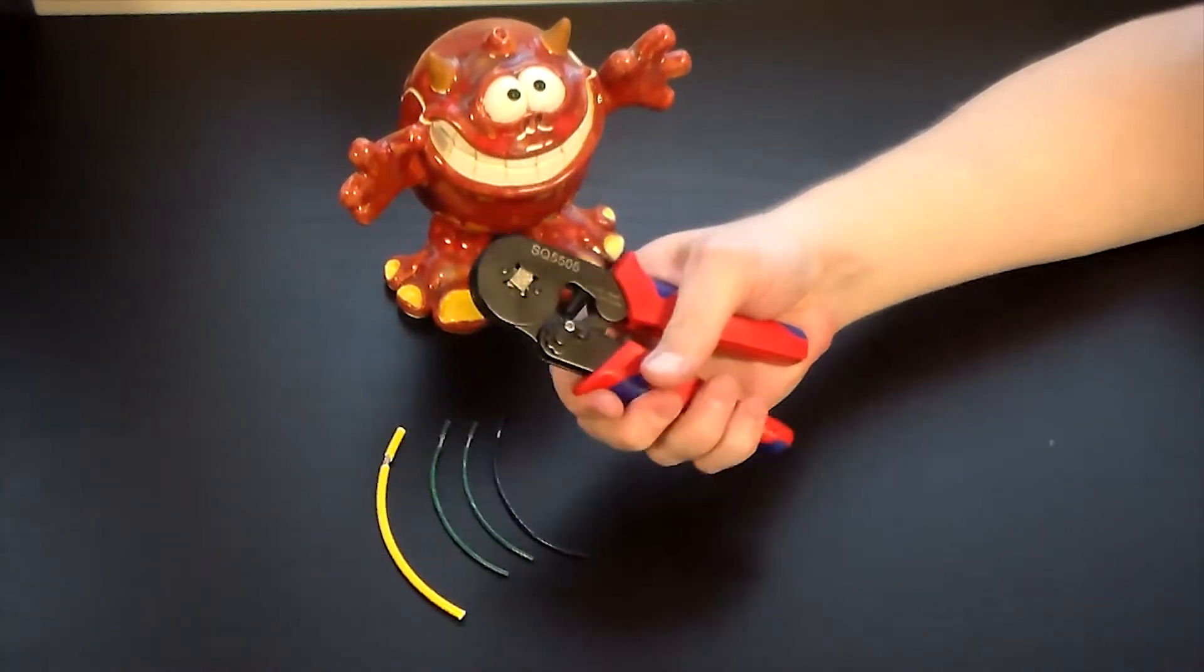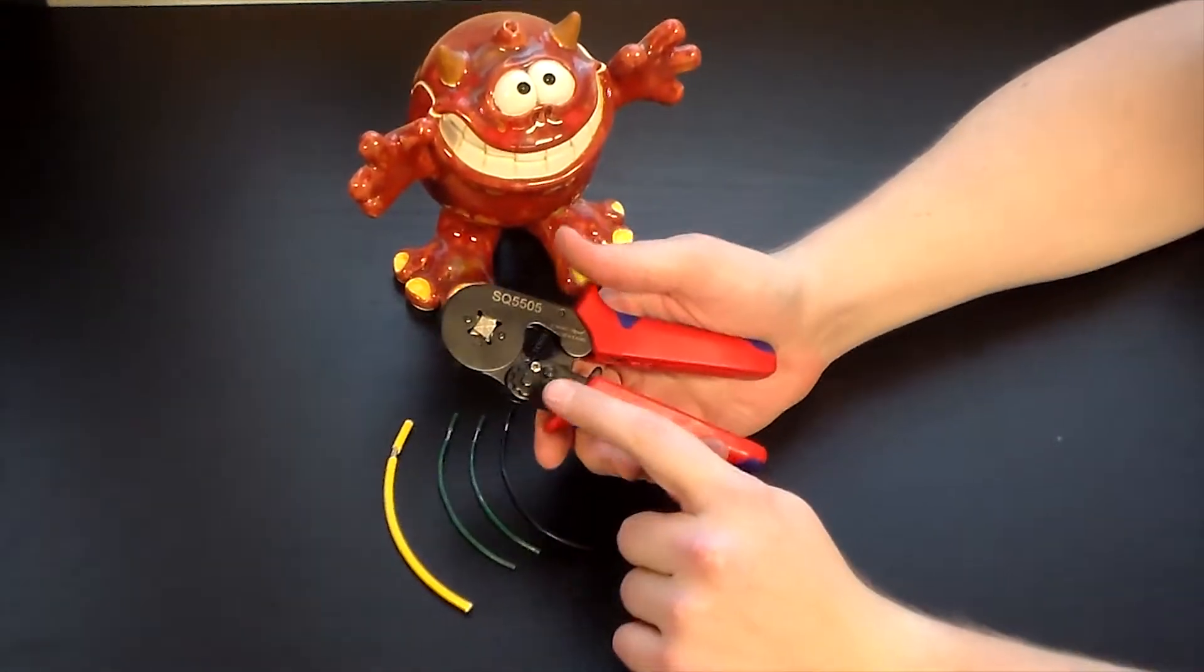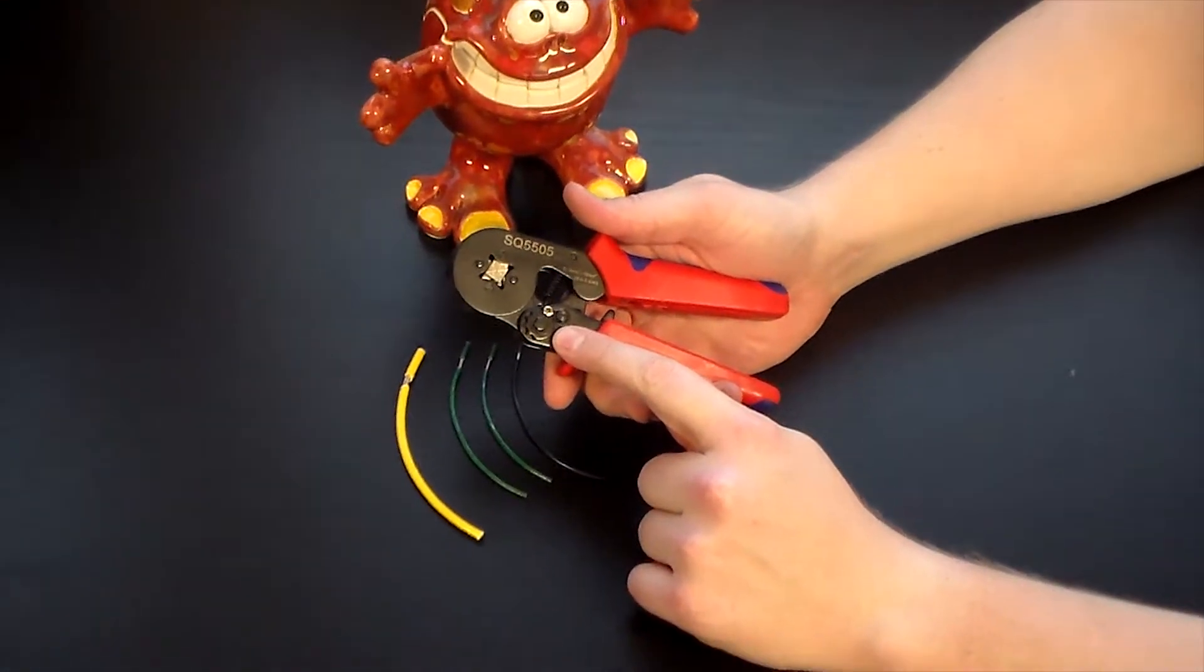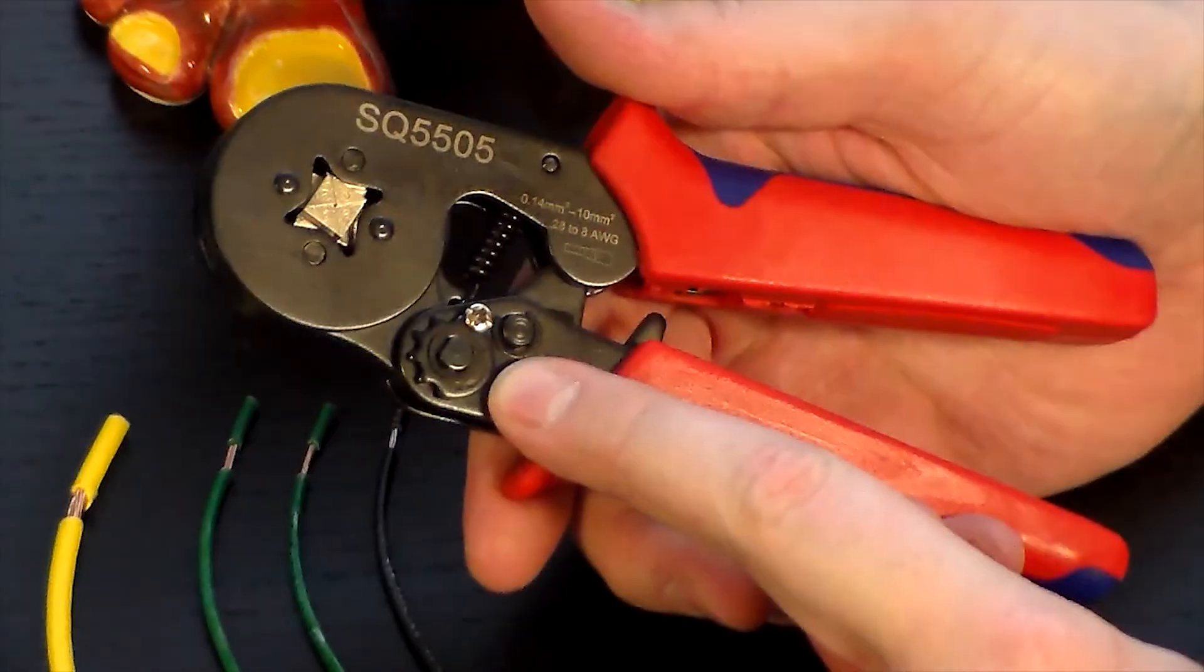First thing you're going to notice is there's a little tension adjustment knob right here. That does not need to be adjusted - it is perfect from the factory. Over time, after several thousand crimps, it might loosen slightly, at which point you can adjust it accordingly.